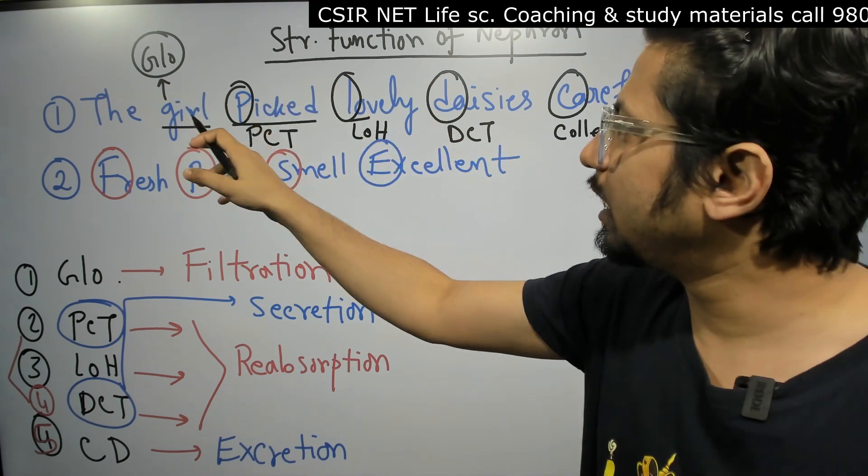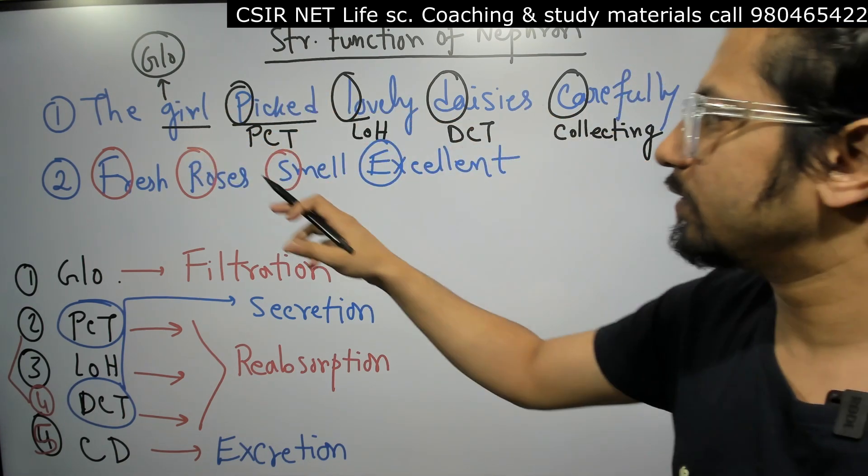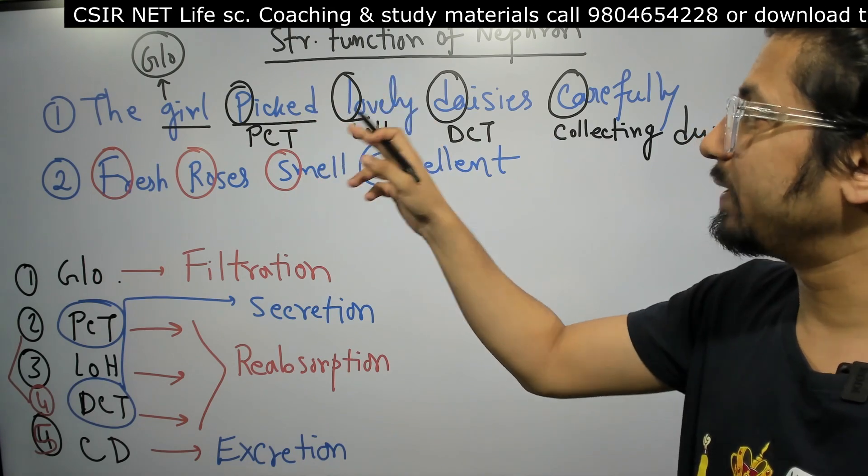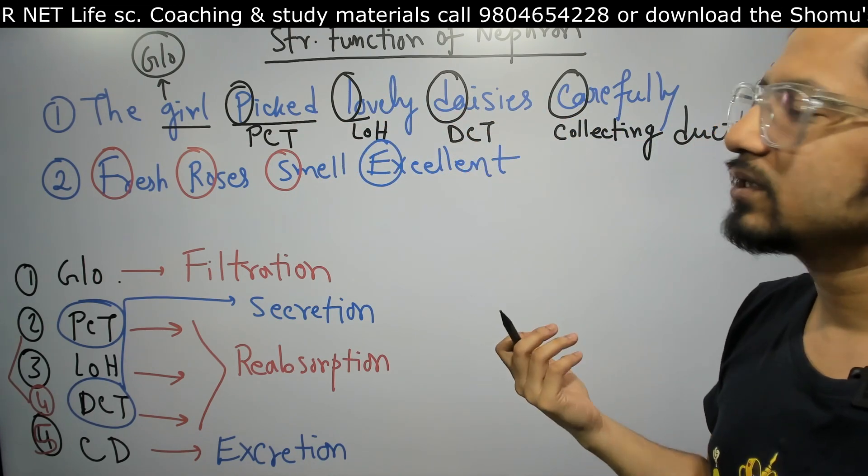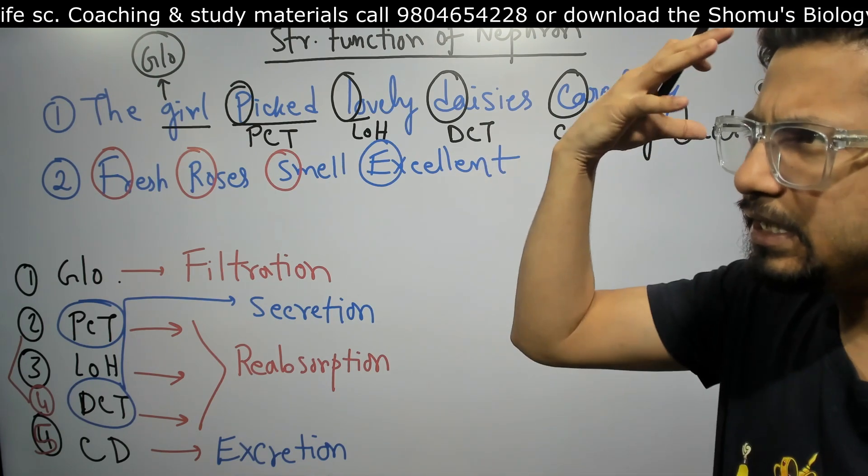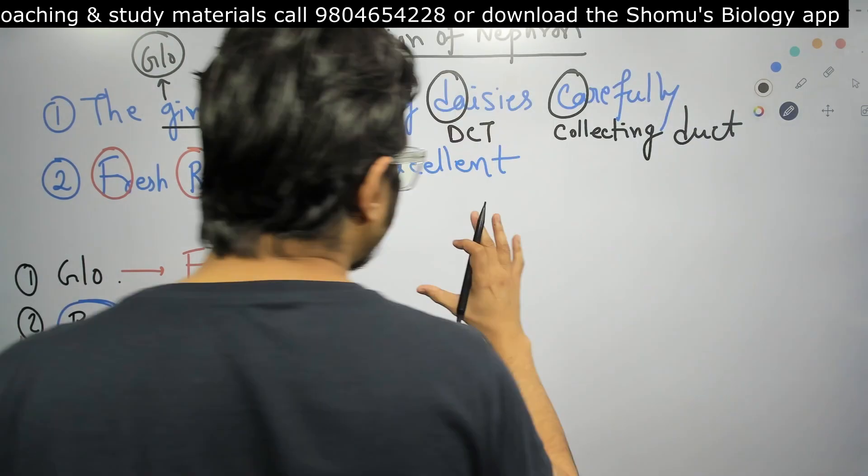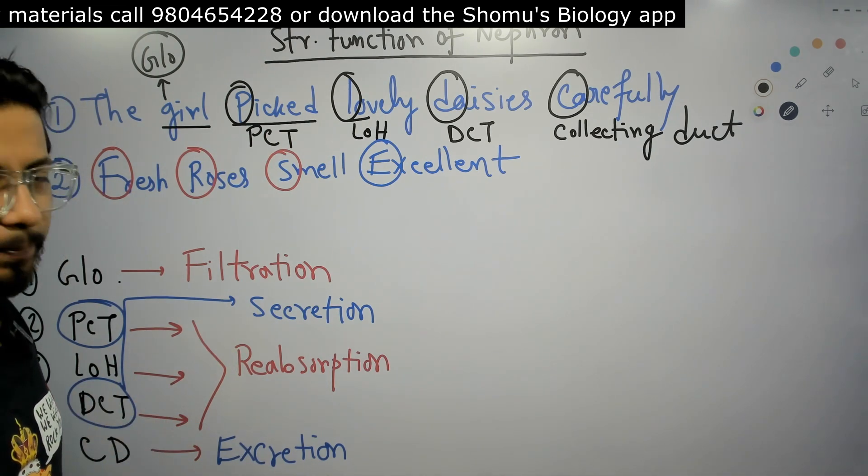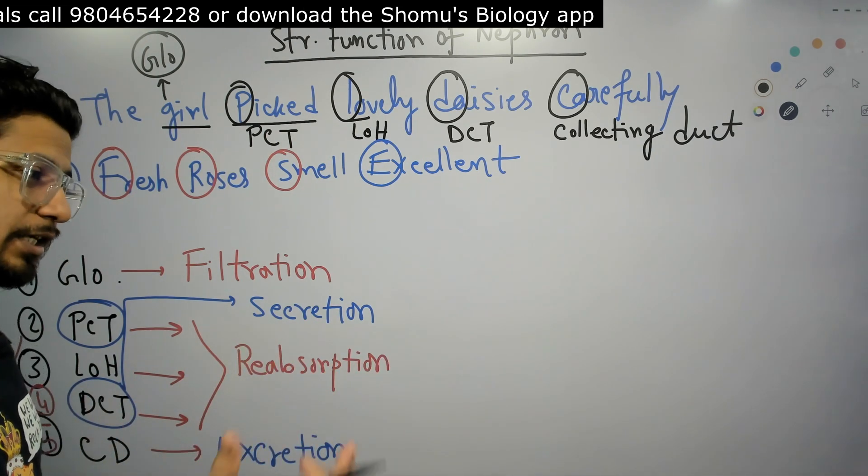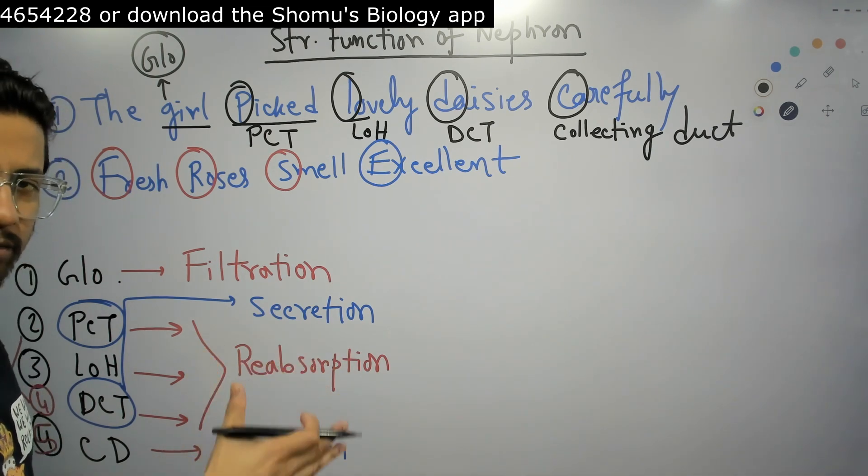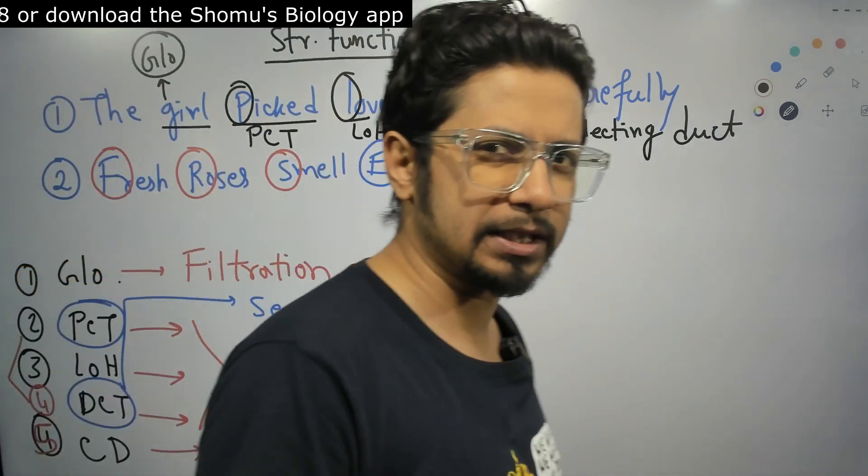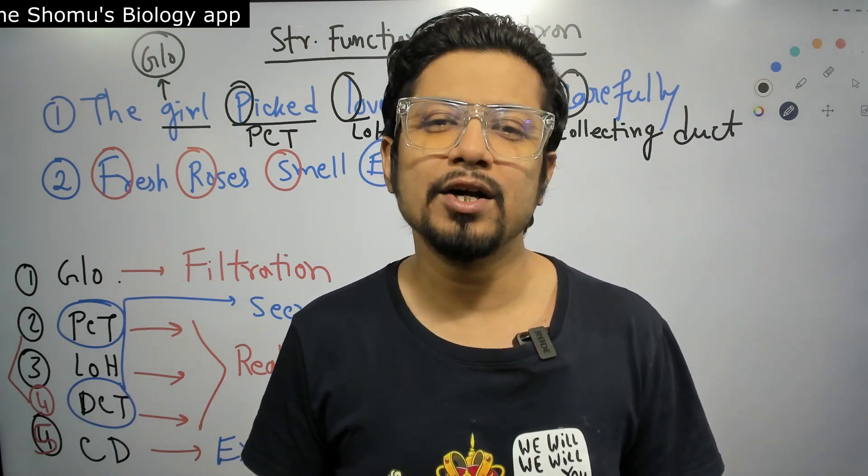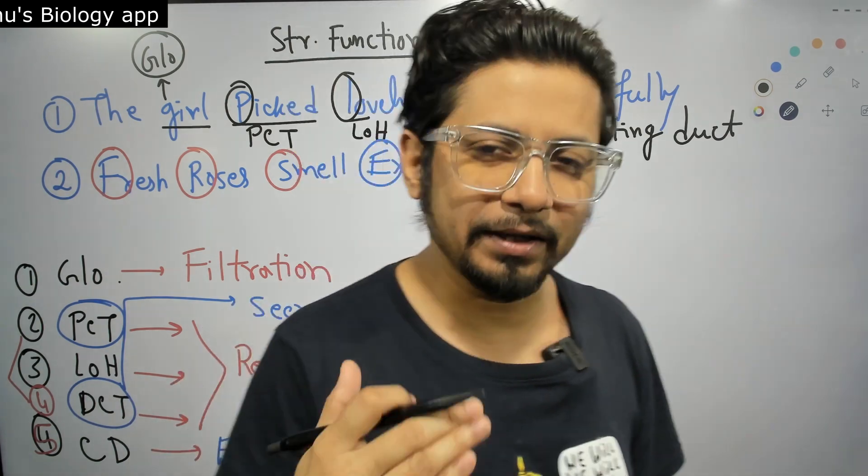So, the girl picked lovely daisies carefully and fresh roses smell excellent. If you remember these two sentences, imagine it, reimagine it. Generally in other videos I put images for better visualization. I didn't do that here because I'm doing it from scratch, just before the exam. I want to provide this lecture faster. But use your imagination in mnemonics because it's a creative thing. You can remember this and you'll never forget it. I believe you get a clear idea about nephron's structure and function.